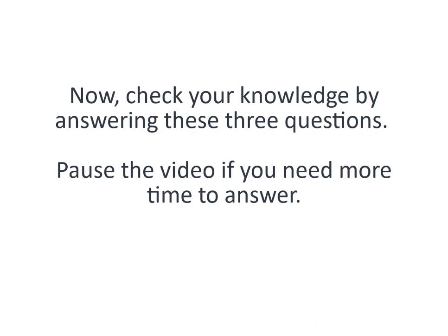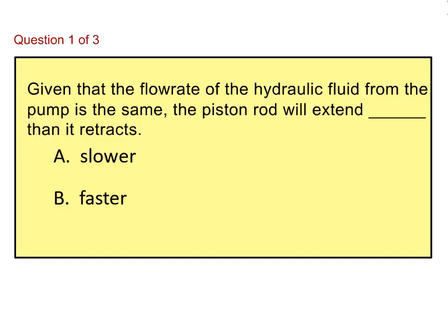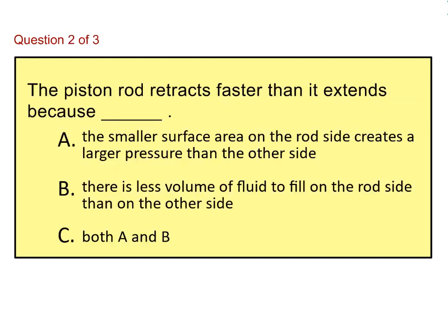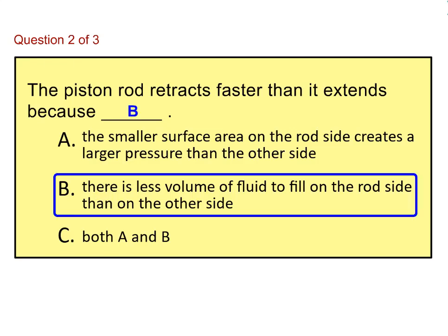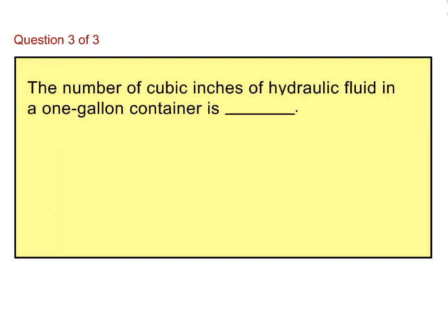Now, check your knowledge by answering these three questions. Pause the video if you need more time to answer. Given that the flow rate of the hydraulic fluid from the pump is the same, the piston rod will extend slower than it retracts. The piston rod retracts faster than it extends because there is less volume of fluid to fill on the rod side than on the other side. The number of cubic inches of hydraulic fluid in a one-gallon container is 231.